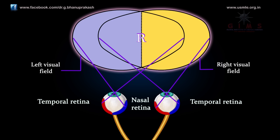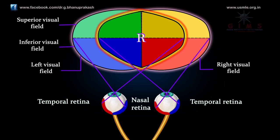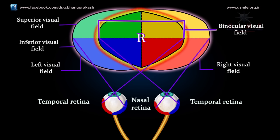The visual field can also be divided vertically into superior and inferior divisions. Note that the visual fields of both eyes overlap extensively in the central portion of each visual hemifield — this region defines the binocular field of view. Vision in the periphery of the field of view is strictly monocular, mediated by the most medial portion of the nasal retina.